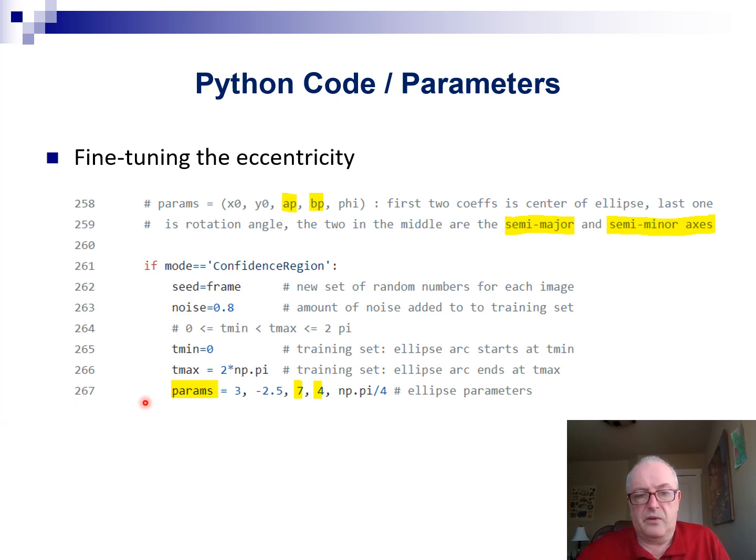If you look at line 267, you would have to change the numbers 7 and 4 that you see here in the code, if you want to have a different type of shape.